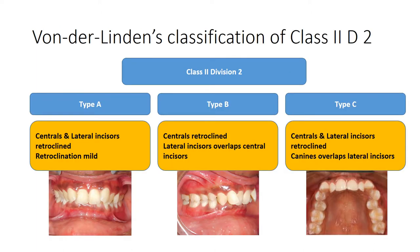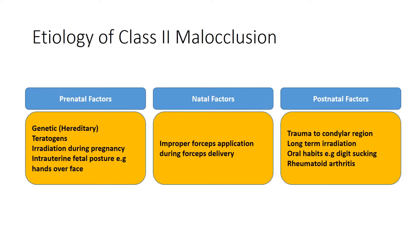Wunderlinden's classification of class 2 division 2 divides it into three types: type A, type B, and type C. In type A, both central and lateral incisors are retroclined but the retroclination is mild. In type B, only the centrals are retroclined and the lateral incisors overlap the centrals. In type C, both centrals and laterals are retroclined with the canines overlapping the lateral incisors.